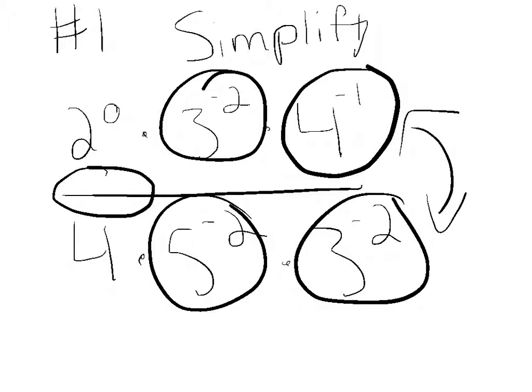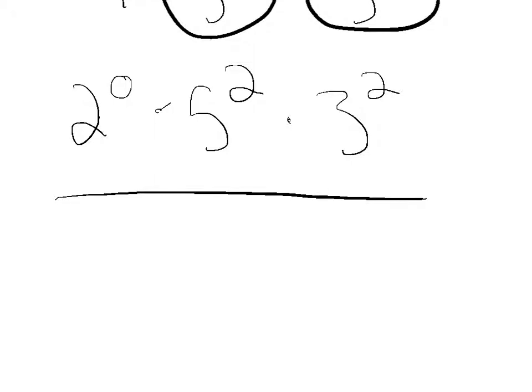What this ends up being is 2 to the 0th power times 5 squared times 3 squared, and that's still going to be over 4 to the power of 1 times 4 to the power of 1 times 3 squared.